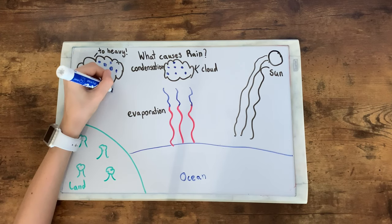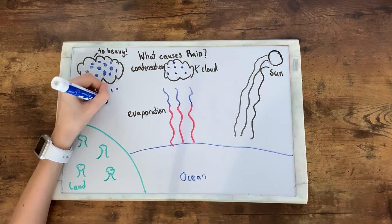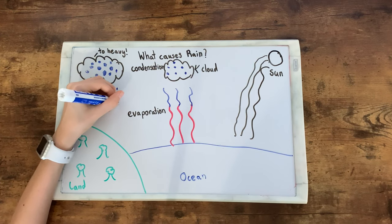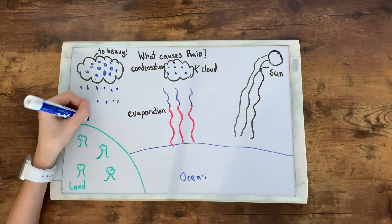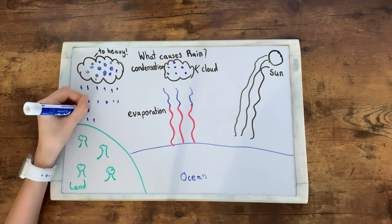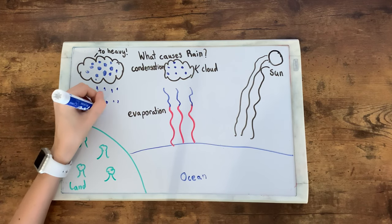Every single raindrop that hits the ground is made of one million of the original tiny water droplets. Crazy, I know!